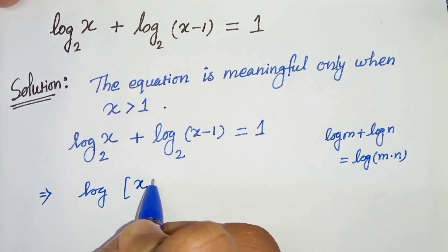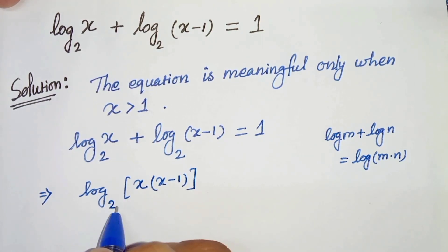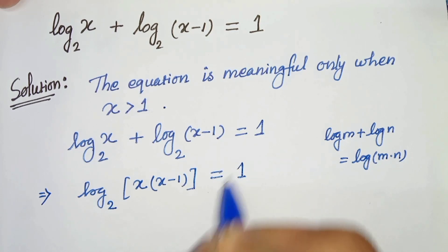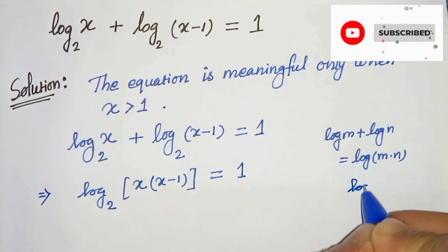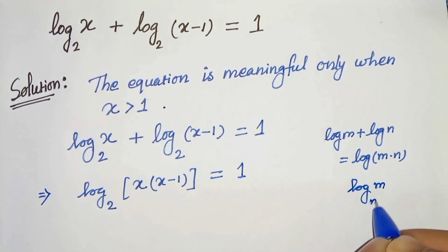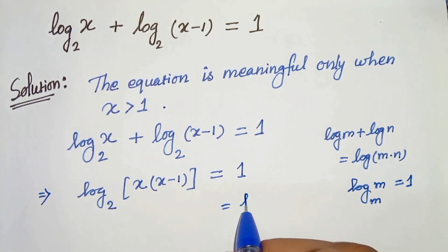And again, we know that log of m with the base as m can be written as 1, so let's write 1 as log of 2 with the base as 2. Now let's compare both sides. We will get x times x minus 1 equals to 2.